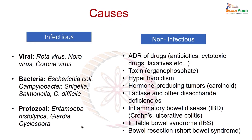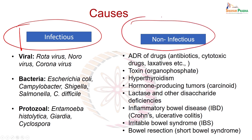The causes of diarrhea are important to know because that determines the strategy for management. The cause can be infectious or non-infectious. Infectious diarrhea has a causative organism; very common in India is rotavirus, one of the commonest viruses in children and infants, along with norovirus and coronavirus. India has led the discovery of an indigenous rotavirus vaccine, now introduced into the national health program. Bacteria causing diarrhea include E. coli, Campylobacter, Shigella, Salmonella, and Clostridium difficile.